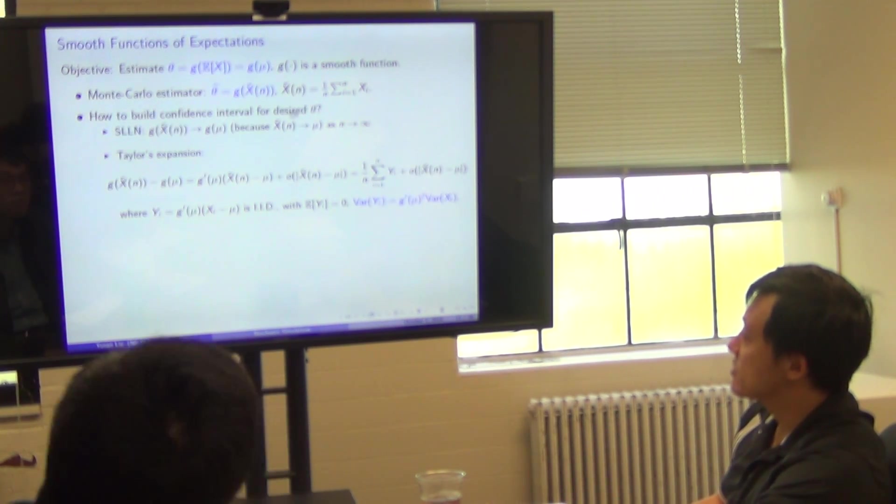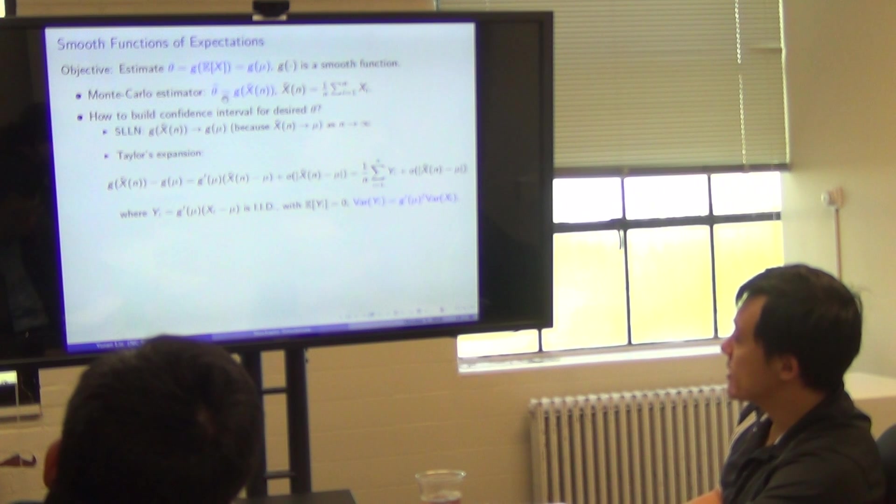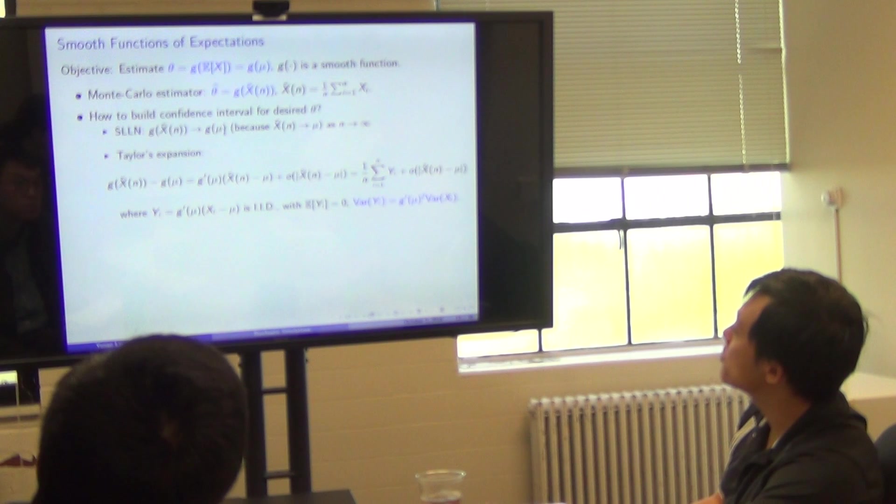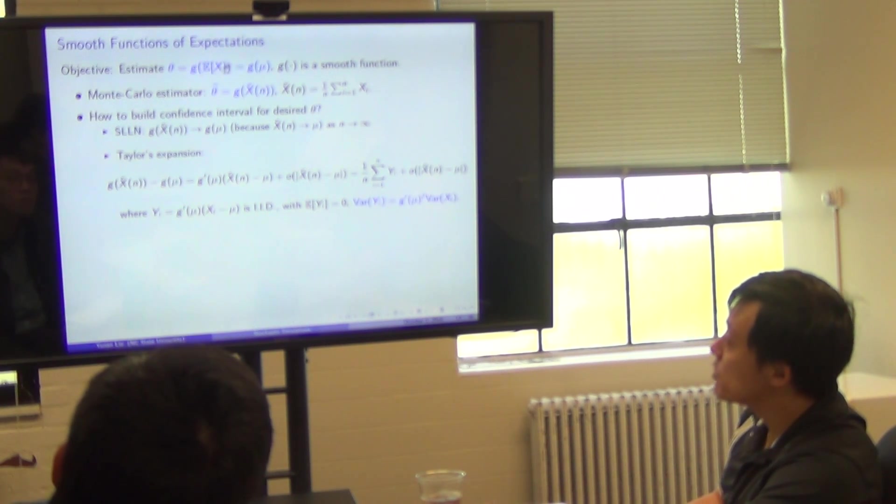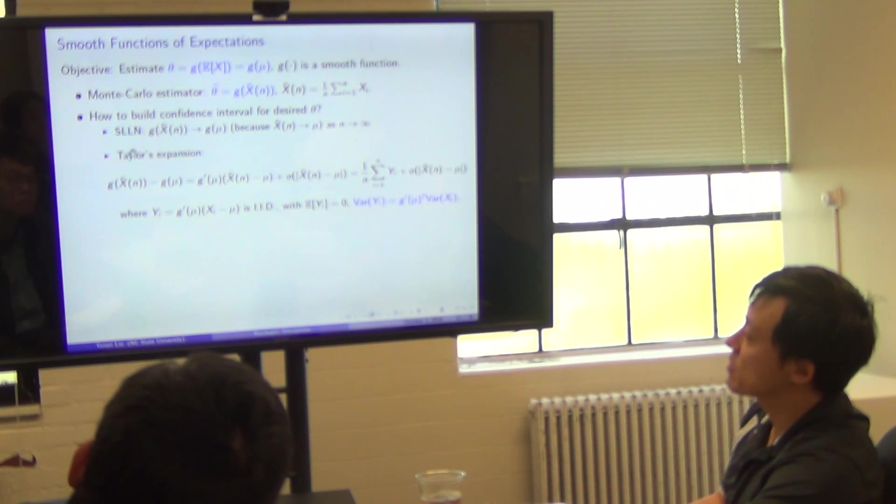How to build a confidence interval for this desired theta, which is given by this? Strong law of large numbers says, theta hat will converge to g of mu. I mean, theta is this guy, and mu is still the mean of x. So this estimator is converging, it's good. Let's take a look at Taylor's expansion.